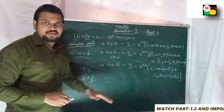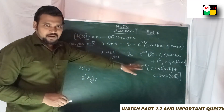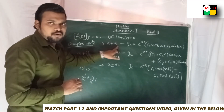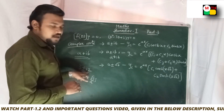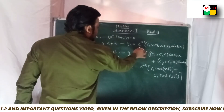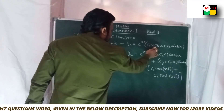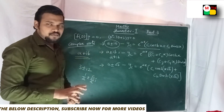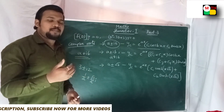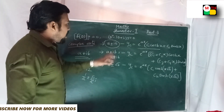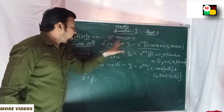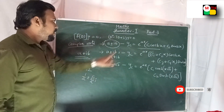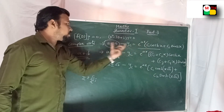There are 3 cases for the general solution. Case 1: for A plus or minus iB, the general solution is e^(Ax) [C1 cos(Bx) + C2 sin(Bx)]. This is the general solution for a normal complex number. For example, if the roots are 2 plus or minus 3i, then A equals 2 and B equals 3. Substituting: e^(2x) [C1 cos(3x) + C2 sin(3x)].